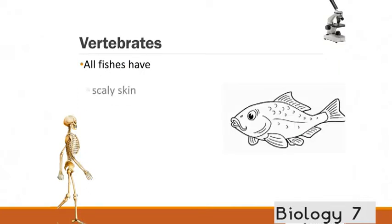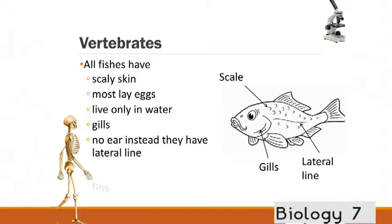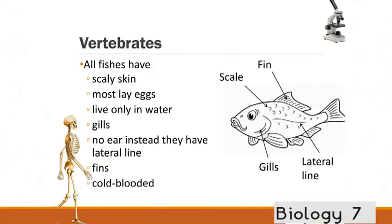How about fish? So all fish have got scales, scaly skin. Most of them lay eggs, but some give live birth. They live only in water. And they've got gills. That's probably the big characteristic that defines them. They're able to get oxygen out of the water. And they have got something called a lateral line, which helps to sense their environment, sense where other fish are around them. Of course, they have got fins to help them navigate through the water and swim. And these are cold-blooded vertebrates as well.